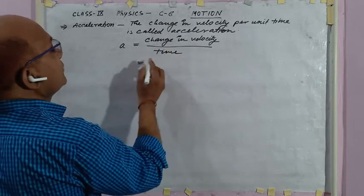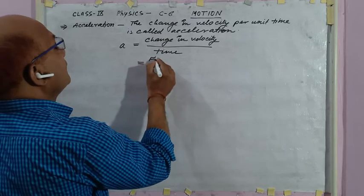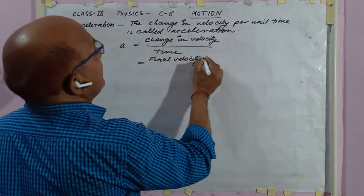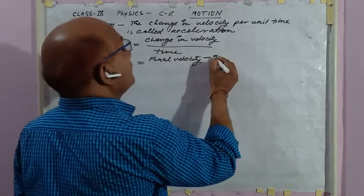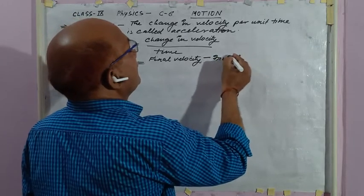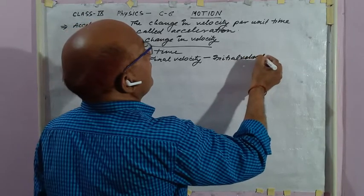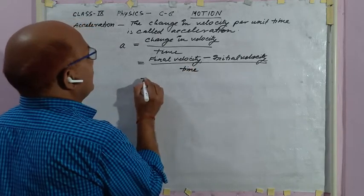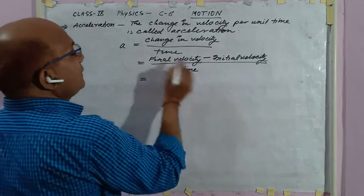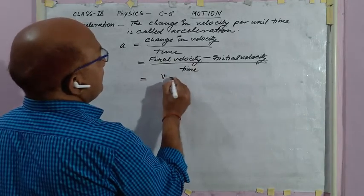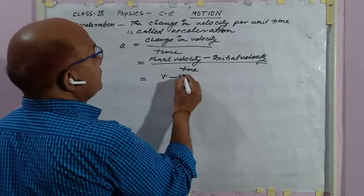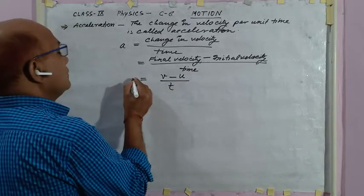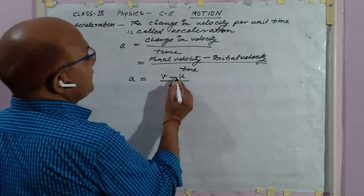Acceleration is equal to change in velocity upon time. Change in velocity means final velocity minus initial velocity, on time. Final velocity is denoted by V, initial velocity is denoted by U, and time is denoted by T. So, acceleration A equals V minus U upon T.